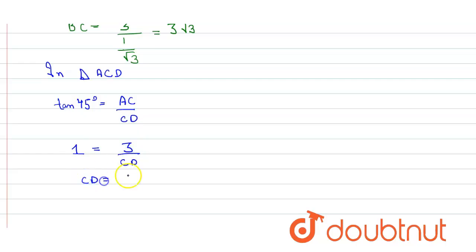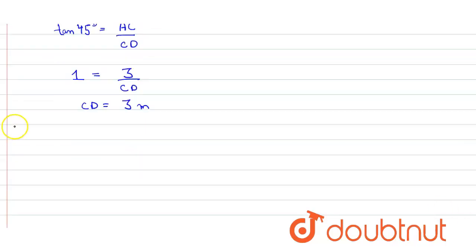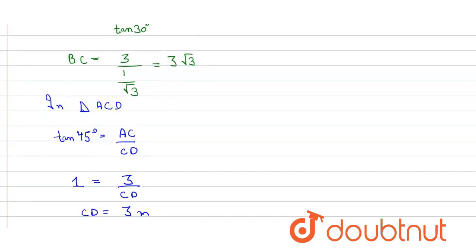Thus the total length of river is equal to sum of both, that is BC plus CD.